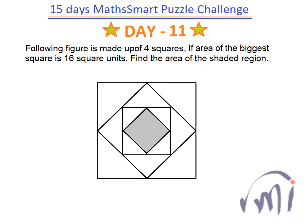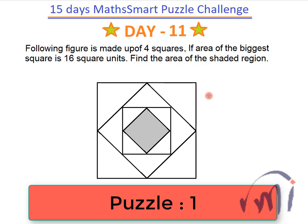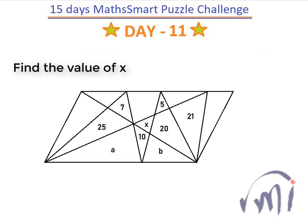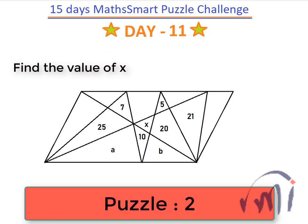Hi friends, this is the puzzle set for day number 11. Here we have two problems. The first one is this figure made up of four squares inside each other. If the area of the bigger square is 16 square units, we have to find the area of the shaded region — that means the area of the smallest square. You can note down this problem, solve it, and post your results.